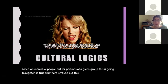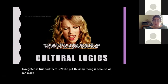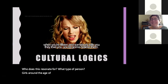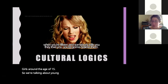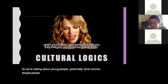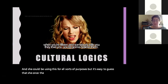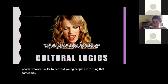Who does this resonate for? Girls around the age of 15, teenagers — so we're talking about young people, potentially other women, maybe people who are very trusting, dreamers, people who are loving and want to be loved. She could be using this for all sorts of purposes — it's easy to guess she wants the song to be successful, that it resonates with people similar to her, that young people are trusting and sometimes people betray that trust, or to show the intensity that comes with youth and first love.